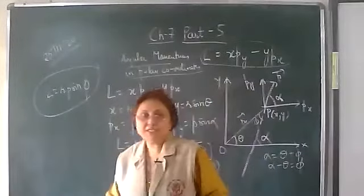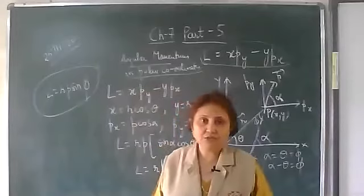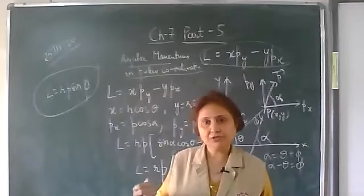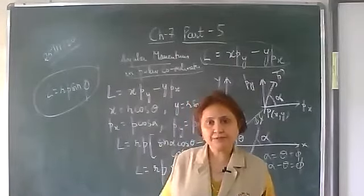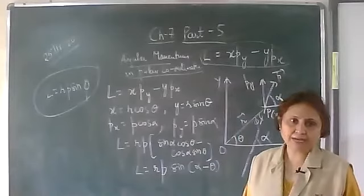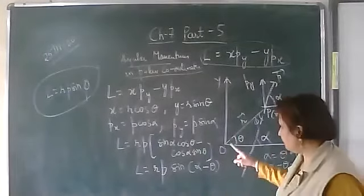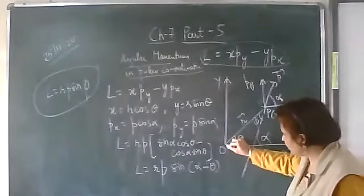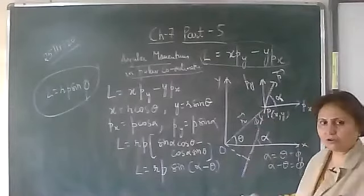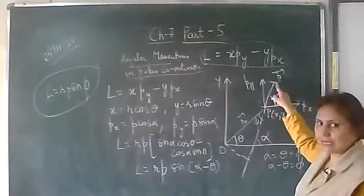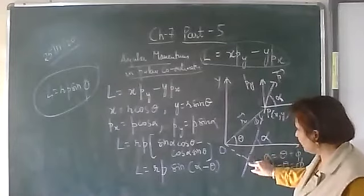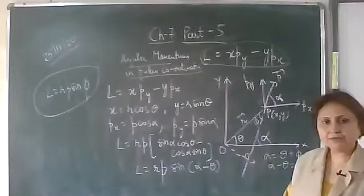The angular momentum in polar coordinates is given by R into P into sin phi. When we define the angular momentum, it is the product of the linear momentum and the perpendicular distance from the axis of rotation. From the origin we draw one perpendicular on the line of action of force, because the force acts along that direction and so does the linear momentum. So here we draw a perpendicular, and ON is the perpendicular.